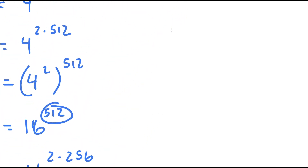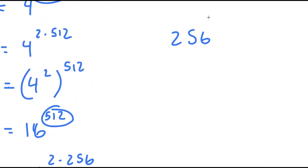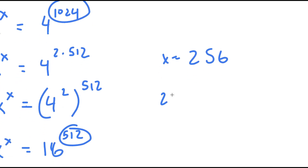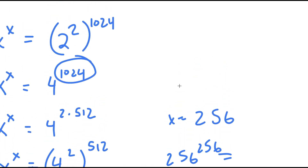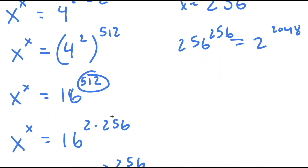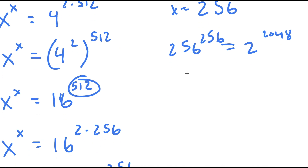To test this, I'm going to plug x = 256 in. So I have 256 to the power of 256 is equal to 2 to the power of 2048. And we just showed all of this, so we know that 2 to the power of 2048 is equal to 2 to the power of 2048. ✓